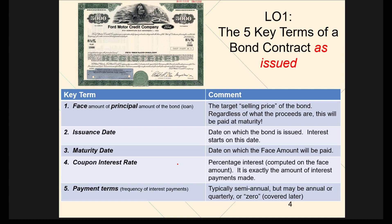The fourth provision is the coupon interest rate. I'm emphasizing the word 'coupon' because that is the amount promised on this bond, and it determines the regular interest payments. You take the coupon interest rate times the dollar amount of the bond. In this case it's 8 and 7/8 percent, so we multiply 8 and 7/8% times $5,000 — that's the annual interest paid by Ford Motor Company to whoever holds the bond. The coupon rate determines the cash flow associated with the bond.